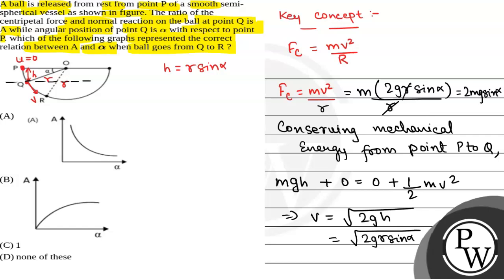Now, we will see at point Q there will be 3 forces acting. First is mg downward and second is N inward and the third is mv squared by R which is centrifugal force radially outward. If this angle is alpha, then this angle will also be alpha.